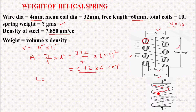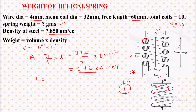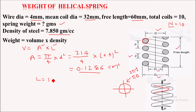One complete turn of a coil is nothing but a 360-degree rotation of the coil. One complete rotation of a coil is circular in shape, so we have to take the circumference of a circle. The circumference of a circle is nothing but 2πr, and 2r can be written as D — the mean coil diameter. So the length of one coil is nothing but the circumference of a circle, which is π times D.